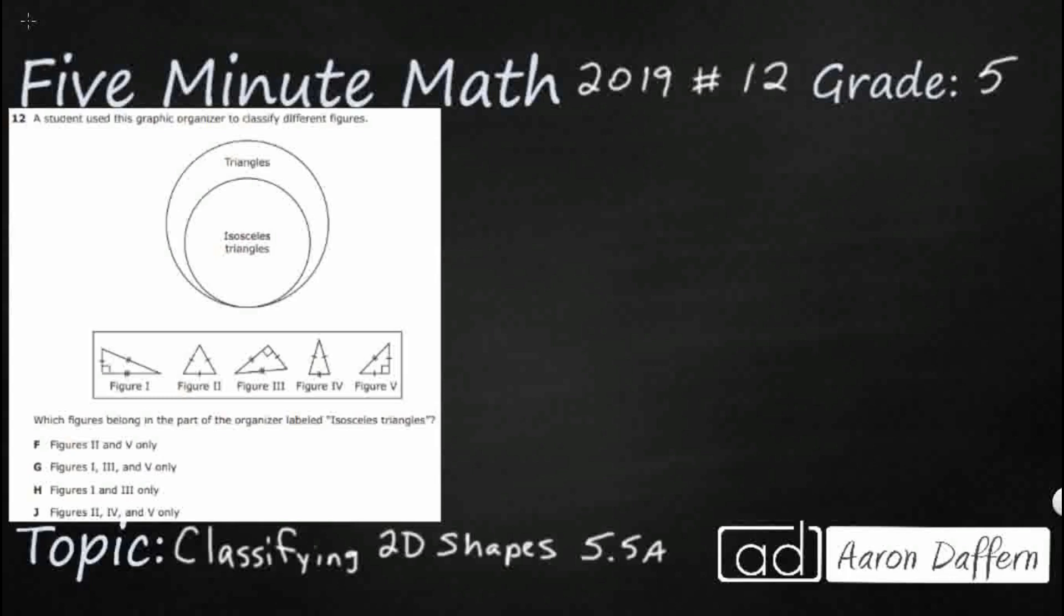So we have this strange looking graphic organizer. It's a type of Venn diagram, but it's just got one really big outside circle that encompasses all triangles, and then we've got an inner circle that just has isosceles triangles. And so we need to find which figures, more than one, can fit inside this isosceles triangle.